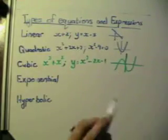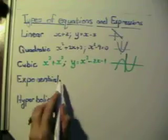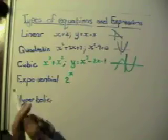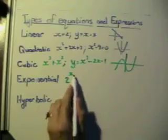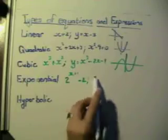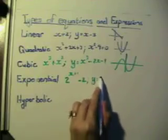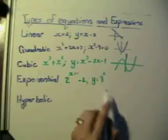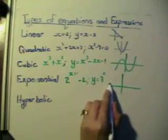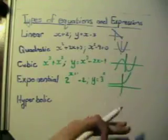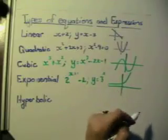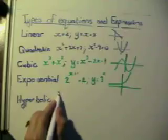The exponential function is a function where x lies in the exponent. For instance, 2 to the power of x plus 1 minus 2 is an exponential expression, and y equals 3 to the power of x is an exponential equation. Typically the graph goes flat on one side and rises or falls sharply on the other.